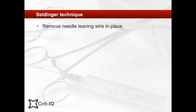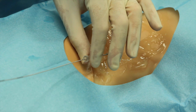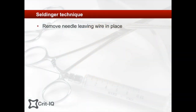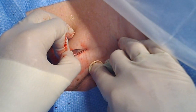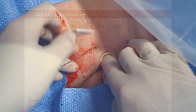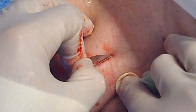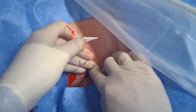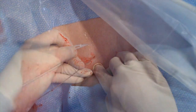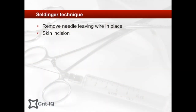The next step involves removal of the needle or cannula, leaving the wire in place. Take care at this stage to ensure that control of the wire is maintained. A small skin incision is made at the entry site of the wire. Be careful to cut away from the wire to avoid damaging it at its insertion point. Take the time to ensure that the wire is actually within the incision and not separated from it by a tag of skin. Taking care at this stage will reap benefits at the next step of dilation.